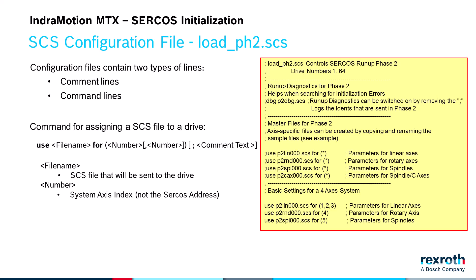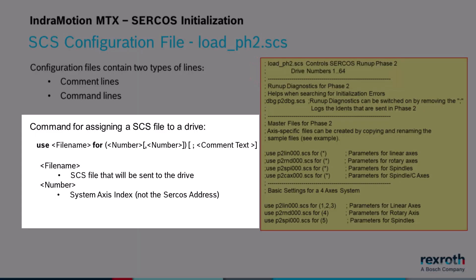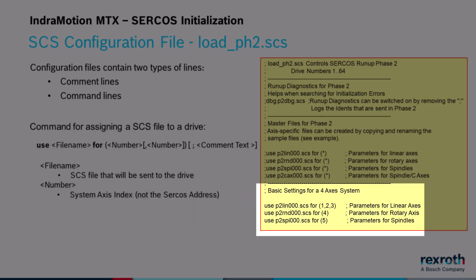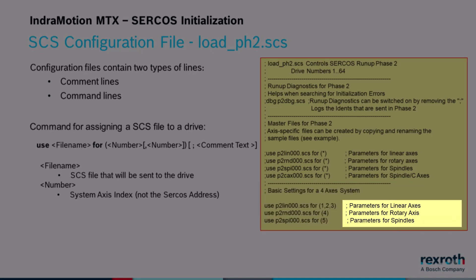There are two types of lines in an SCS configuration file: comment lines and command lines. Comment lines always begin with a semicolon. The USE command specifies which SCS files are transmitted to the drives. The number inside the parentheses is the system axis index and not the CIRCOS address. Comments can also be added to the command lines; the NC interprets all characters after a semicolon as a comment. Comments are not transferred to the drives — they are just used to improve structure and clarity.